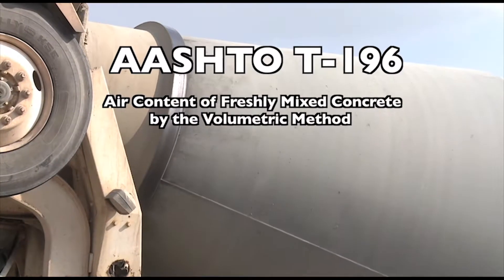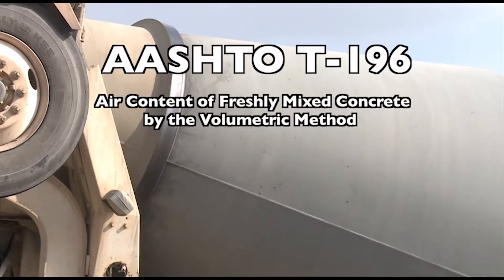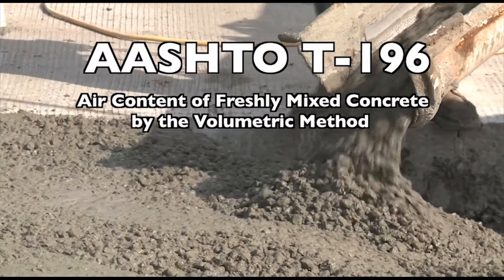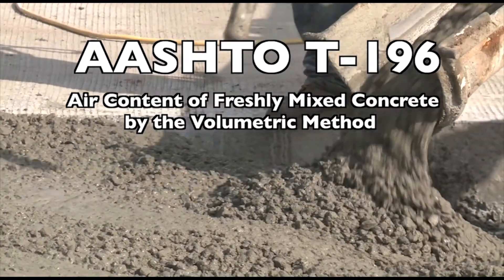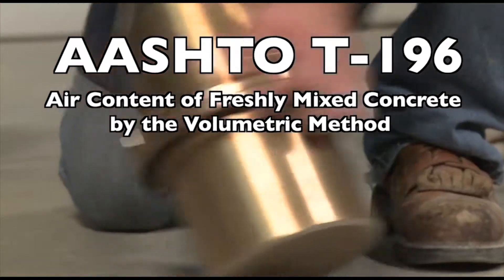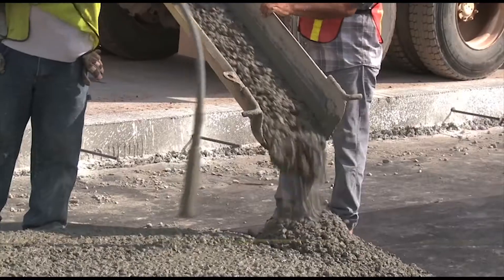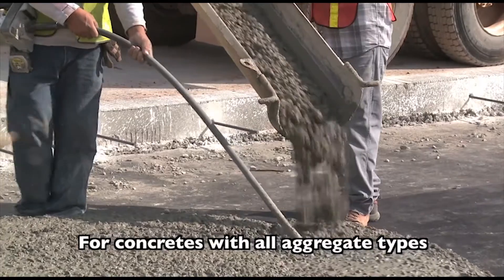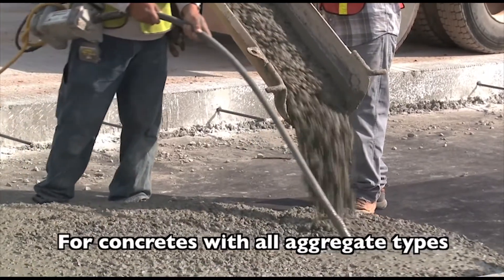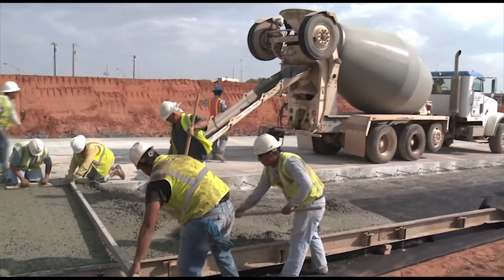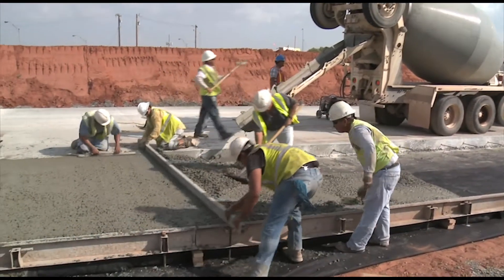AASHTO T196 covers the determination of the air content of freshly mixed concrete by the volumetric method, commonly referred to as the roll-o-meter test. This method is appropriate for concrete containing any type of aggregate, whether it's dense, cellular, or lightweight.